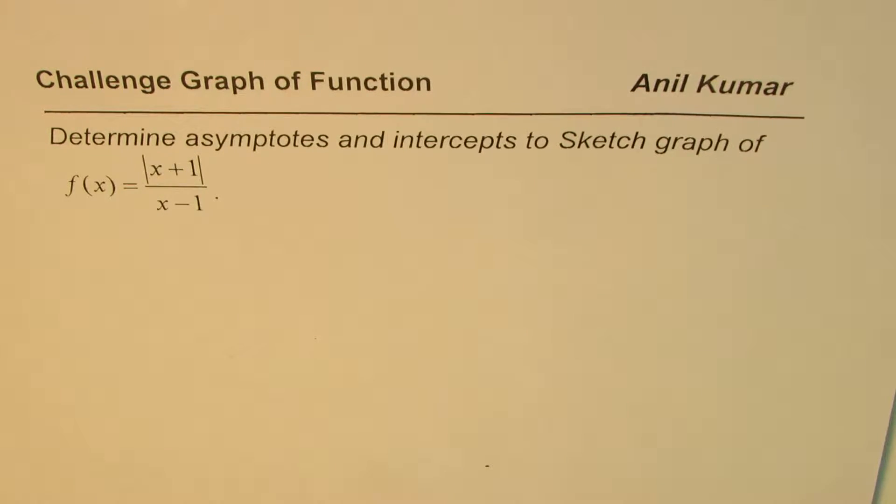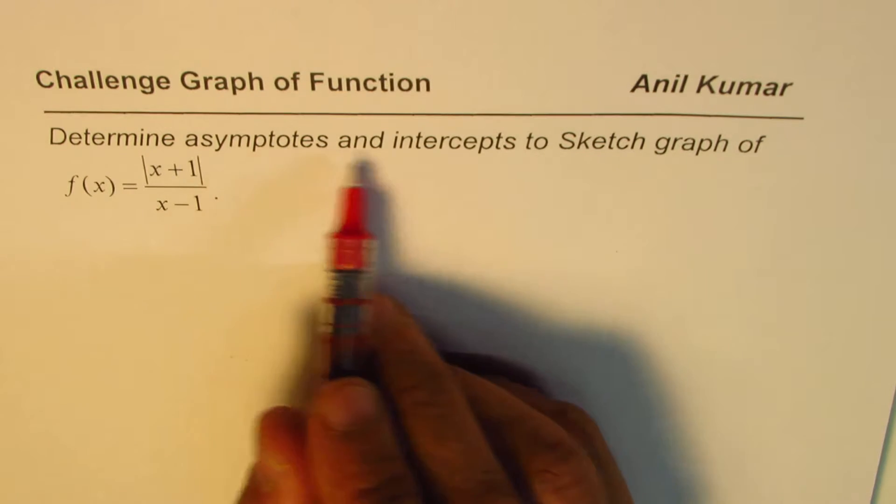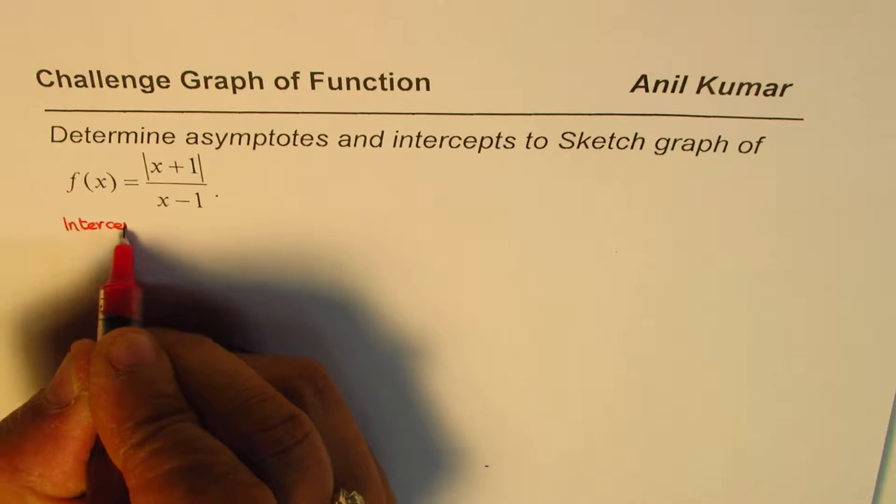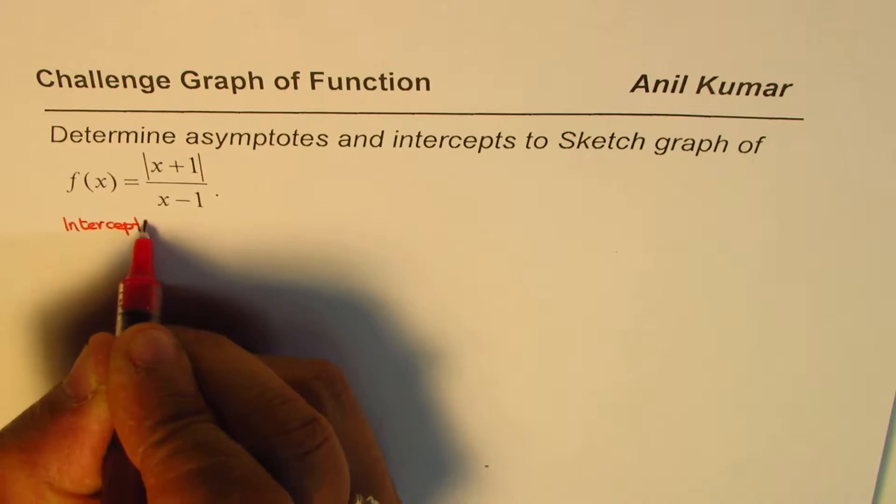You could sketch a fairly good graph with that information. Let's begin by finding the intercepts and then the asymptotes. For the x-intercept, the x-intercept is a point where the y value is 0, meaning the numerator is 0. So f(x) = 0, which means the absolute value of x plus 1 equals 0, giving us x equals minus 1. Therefore, we have an x-intercept at the point (-1, 0).